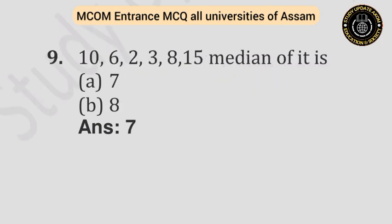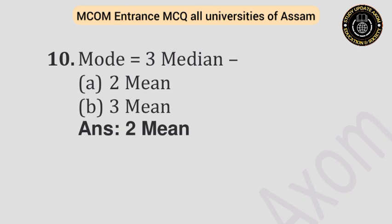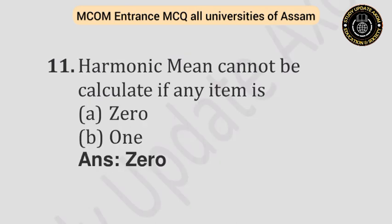Question number nine: For the data 10, 6, 2, 3, 8, 5 — the median is — Option A: Seven. Option B: Eight. Answer is seven. Question number ten: Mode equals 3 Median minus — Option A: 2 Mean. Option B: 3 Mean. Answer is 2 Mean.